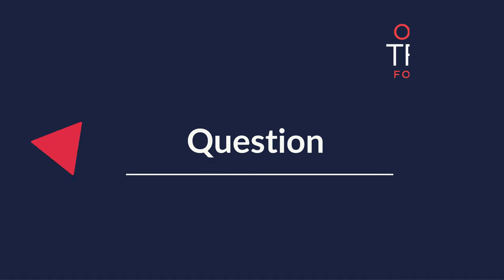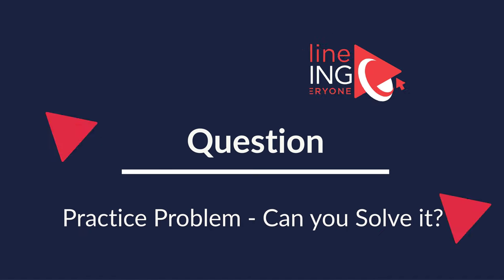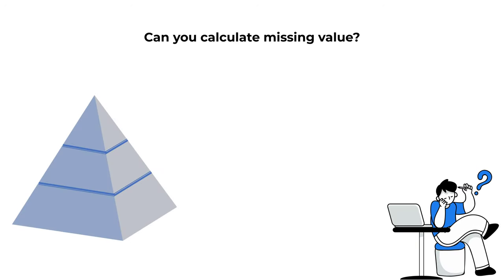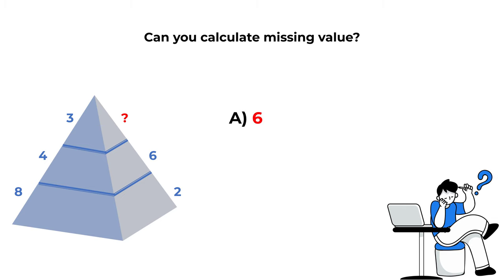Here's the question for you to practice. You're presented with a triangle broken down into three equal horizontal parts. On the left side of the triangle you see numbers 8, 4, and 3 going from bottom to top, and on the right side you see numbers 2, 6, and a missing number. You need to select the missing number from four choices: choice A, 6; choice B, 10; choice C, 7; choice D, 2.